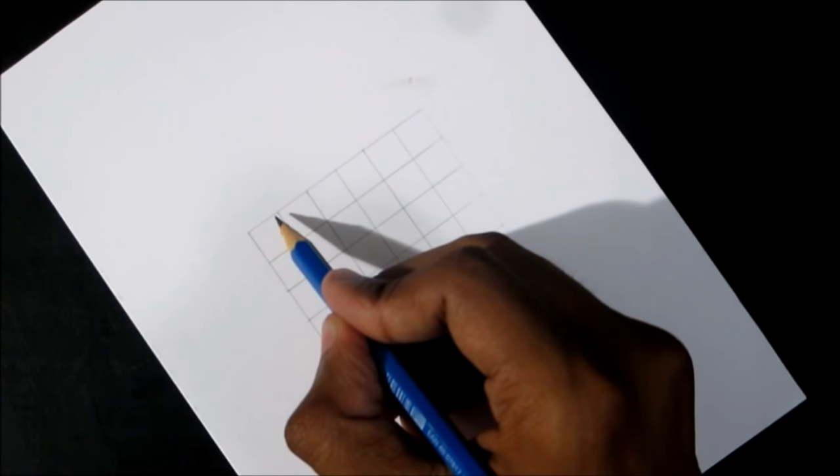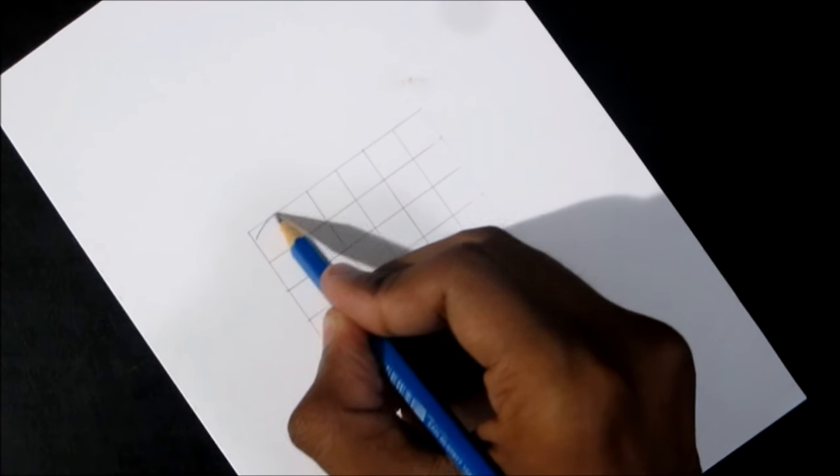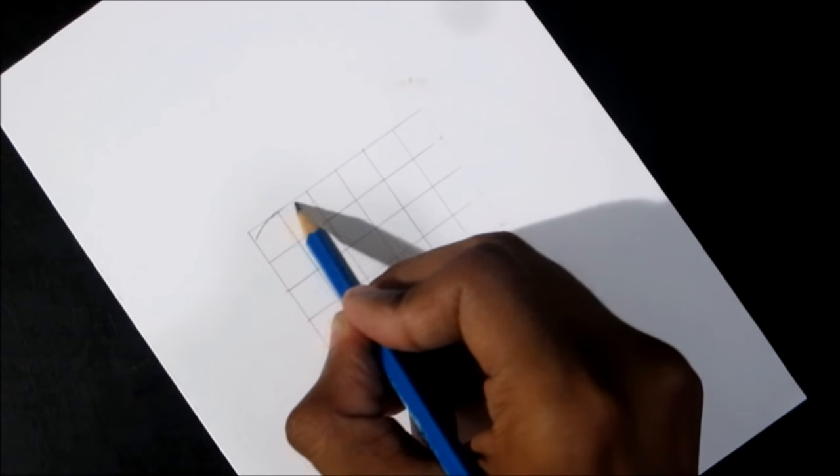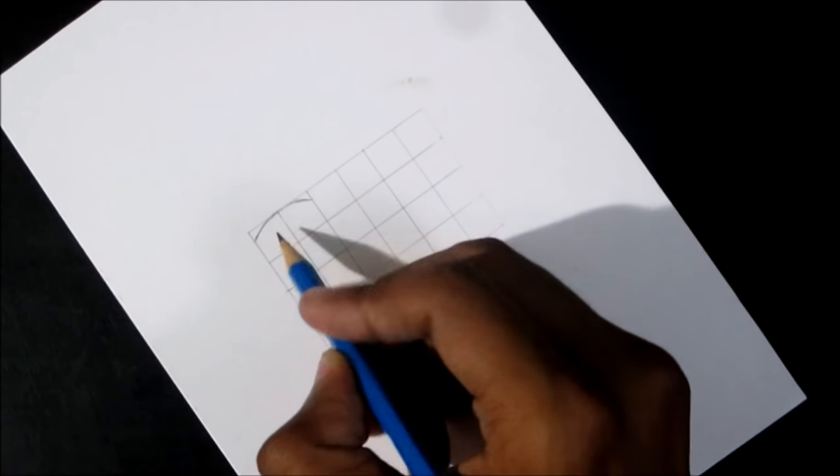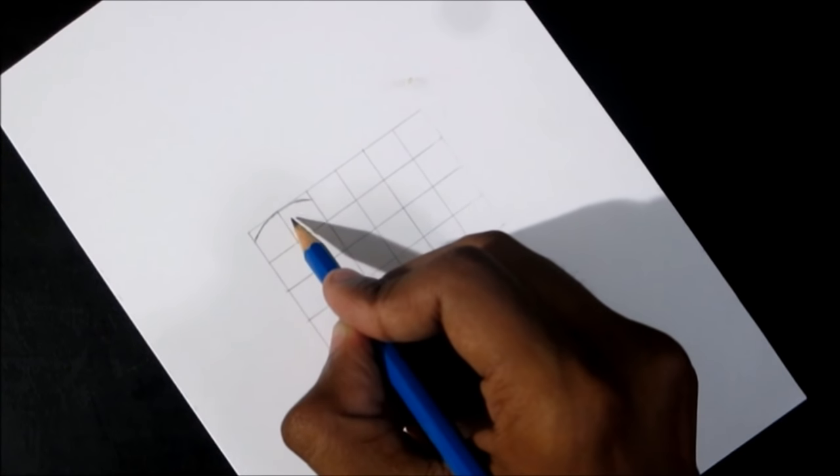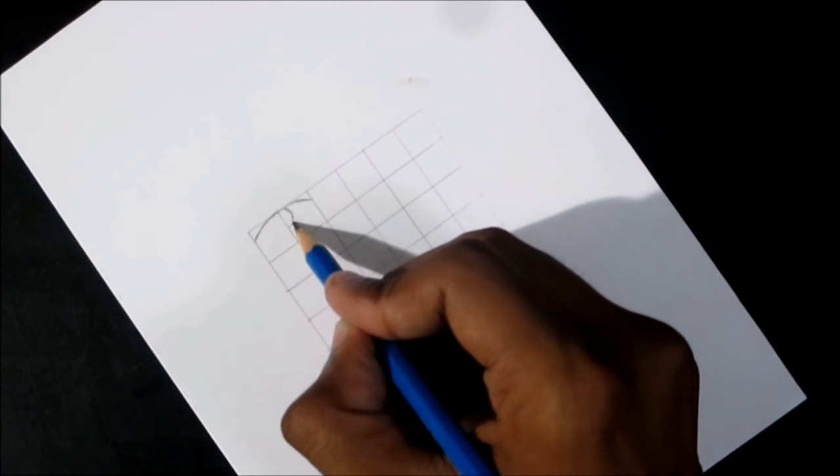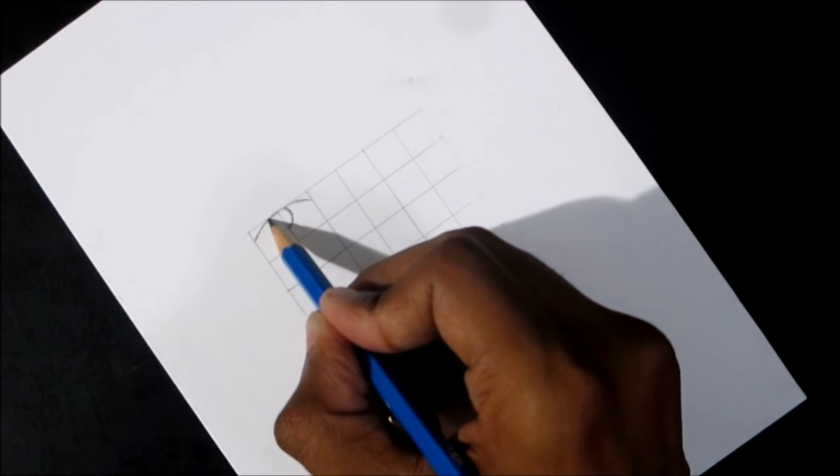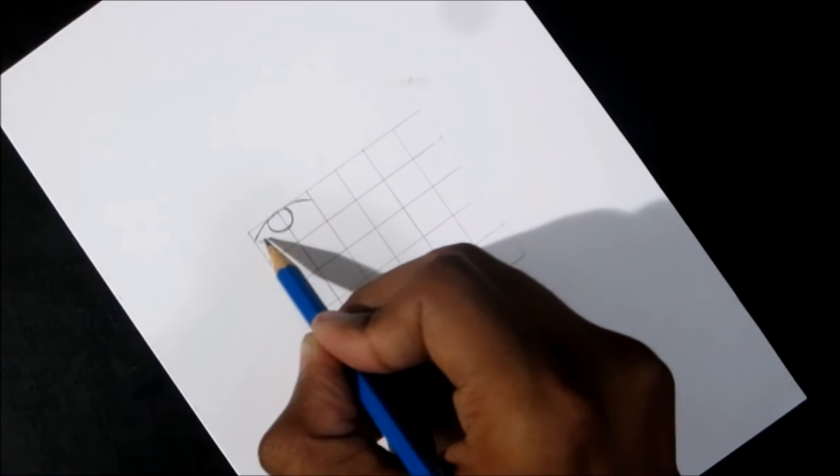Take the topmost line as reference and start drawing the first eye like this. The center of the first two boxes will be the center of retina. Just draw light outlines and don't put much pressure on the pencil.